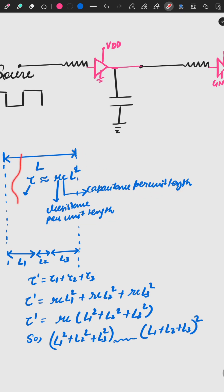If I break this wire into L1, L2, L3, then T' will be T1 + T2 + T3, which equals RC(L1² + L2² + L3²). But if I put (L1 + L2 + L3)² and do the whole square, that delay will be more. So breaking the wire and adding buffers reduces the delay, because this Tau dash is less than Tau. In this way, it's helping the delay get reduced while strengthening the signals.